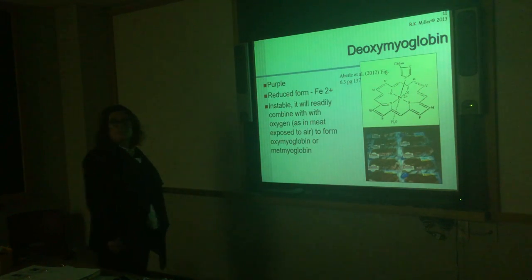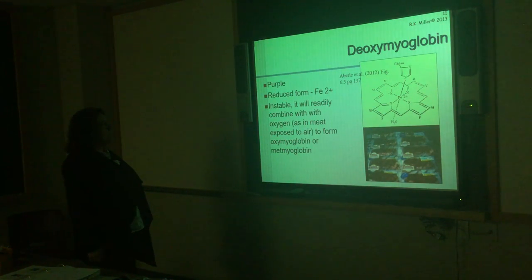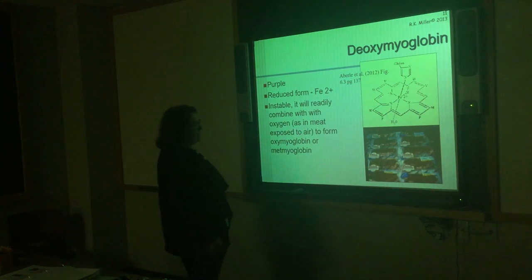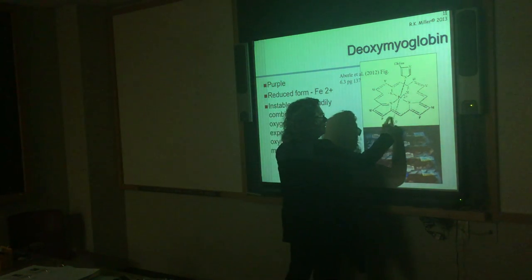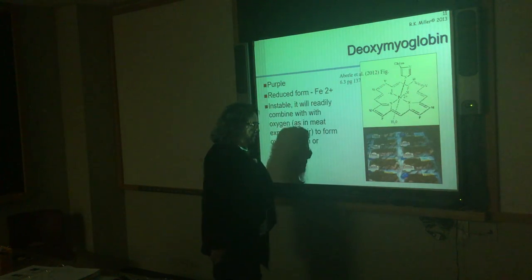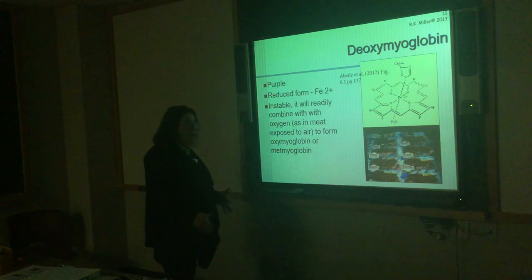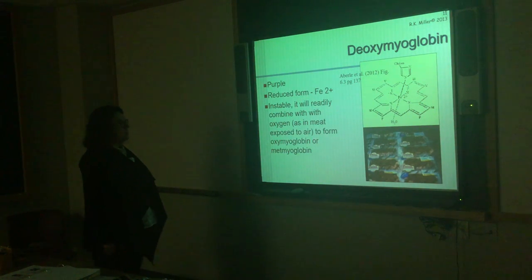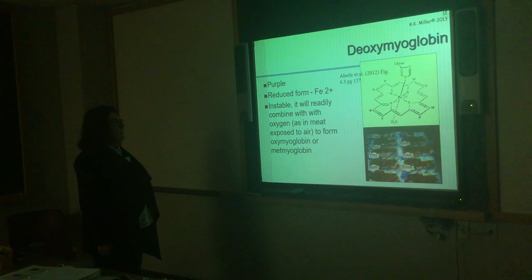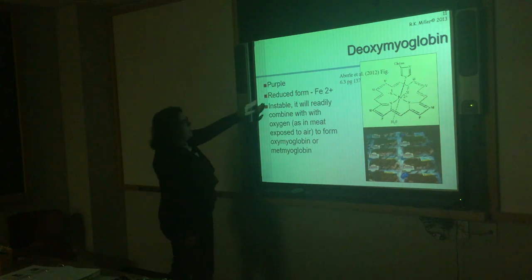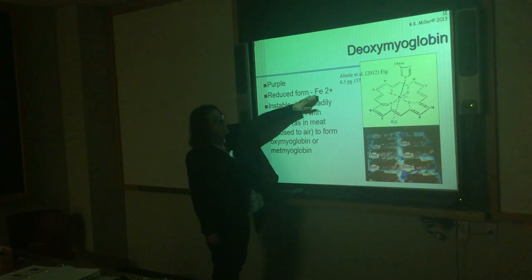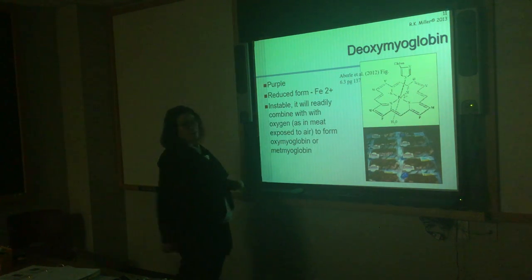Let's talk about each pigment. Deoxymyoglobin: water is by the ligand, this is vacuum-packaged at very low partial pressure. Almost all the pigment in vacuum packaging is in the deoxy state. It's purple in color, in the Fe²⁺ state — the reduced form. It's very unstable — a little bit of oxygen in the package and it immediately changes, because the ligand has a greater affinity for oxygen than for water.